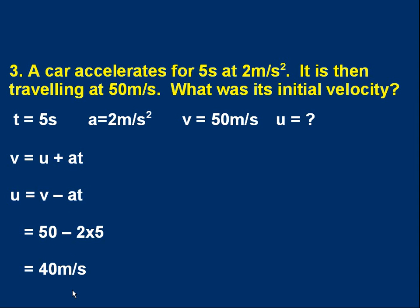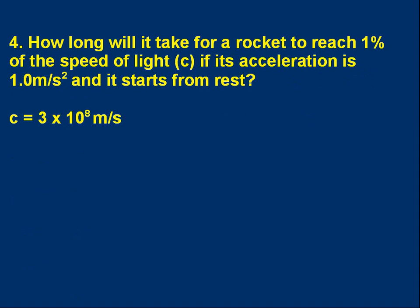Question four. How long will it take for a rocket to reach 1% of the speed of light, symbol c, if the rocket's acceleration is 1.0 meters per second squared, and it starts from rest. There's the value of c, the speed of light. Pause the video and try it.